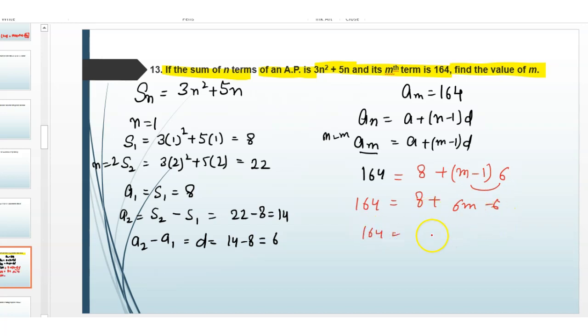164 is equal to 8 minus 6 is 2, and here minus 2 is equal to 6m. 162 is equal to 6m. m is equal to 27.